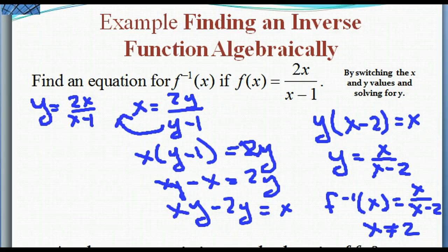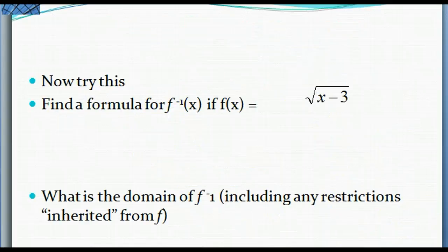That restriction is different from the restriction on the original function. Now try this one on your own: find a formula for the inverse of f(x) = the square root of (x minus 3). What is the domain of the inverse, including any restrictions inherited from f? When you start with the original function, you cannot have a negative number under the square root — that carries over to the inverse.